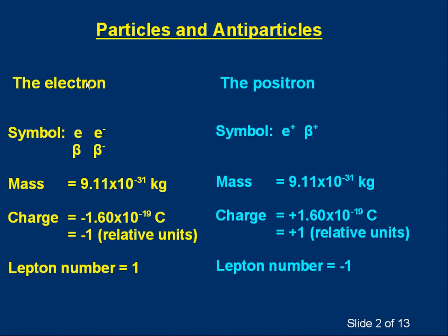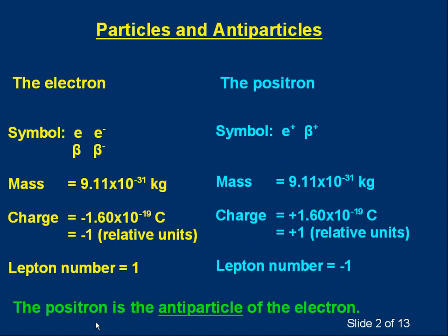If we compare the electron to the positron, they're rather similar. They have the same mass, but some other properties are reversed. The positron is called the antiparticle of the electron — in a sense, it's the opposite of the electron. But it's not just these numbers that make the positron the antiparticle; there's something else as well. So let's talk about annihilation.